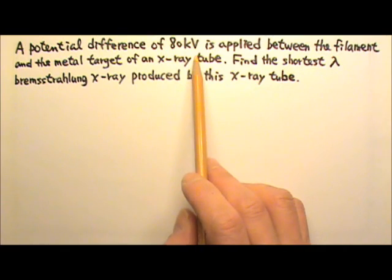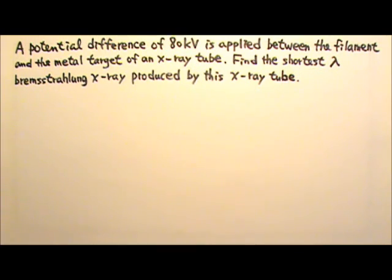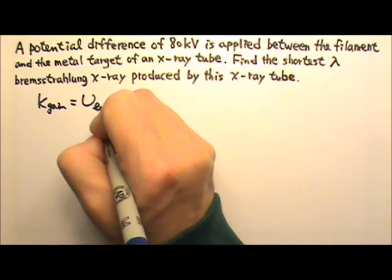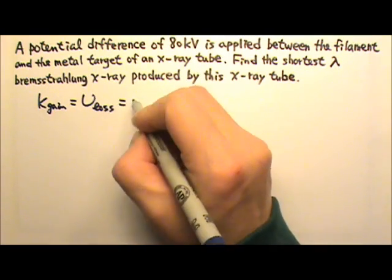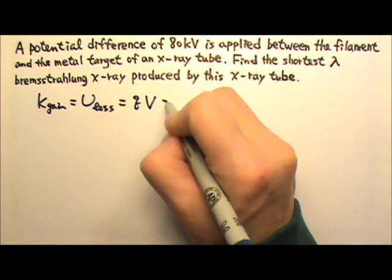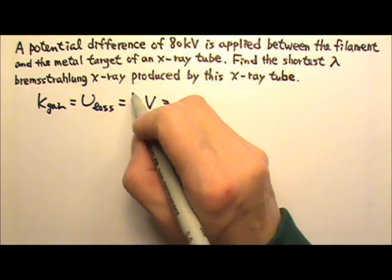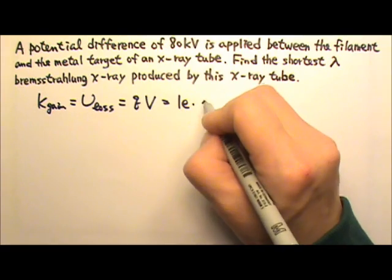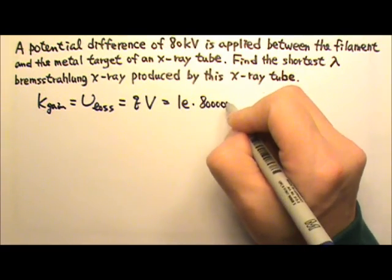When we use a voltage to accelerate a charge, we know that the kinetic energy gain comes from the potential energy loss, and U equals QV. Because we're talking about electrons, Q is 1e, and the voltage here is 80,000 volts.